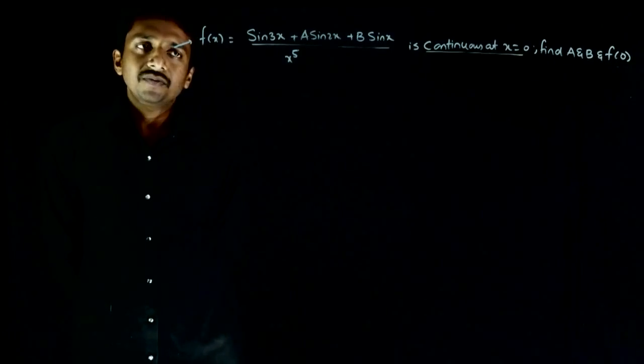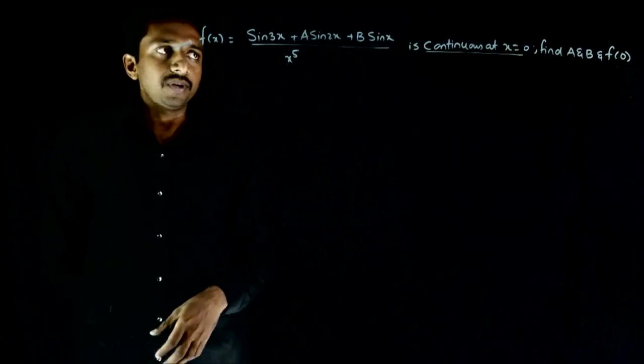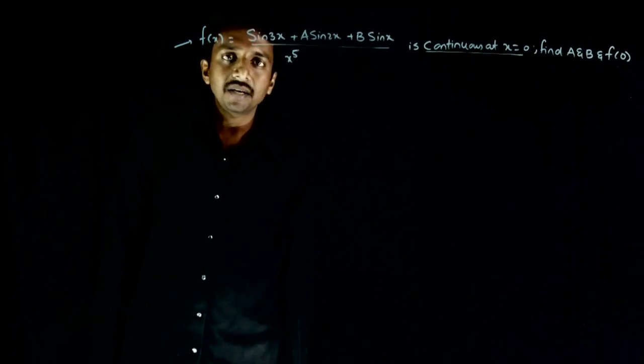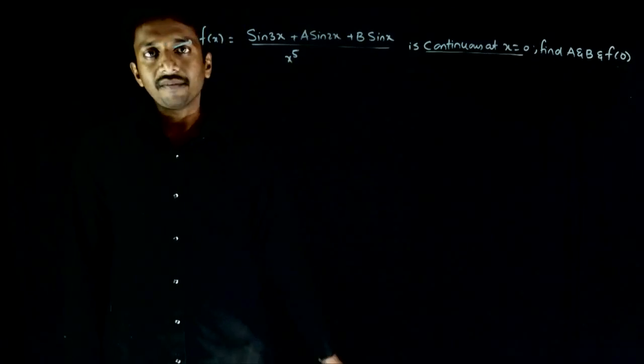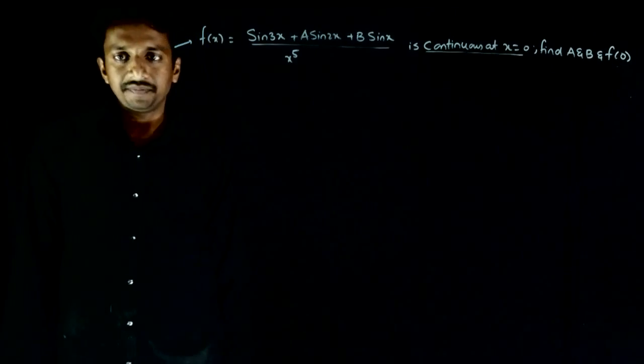Welcome students. This question gives f(x) equals sin 3x plus a sin 2x plus b sin x divided by x to the power 5, and this is continuous at x equal to 0. You are asked to find the values of a, b, and f(0). Let us start the analysis of this question.